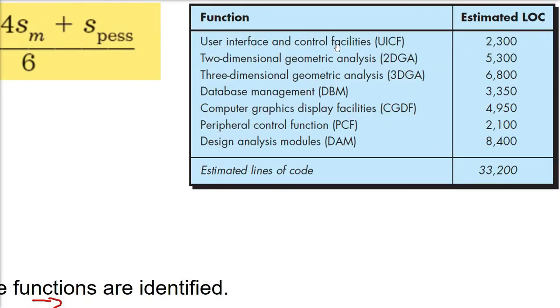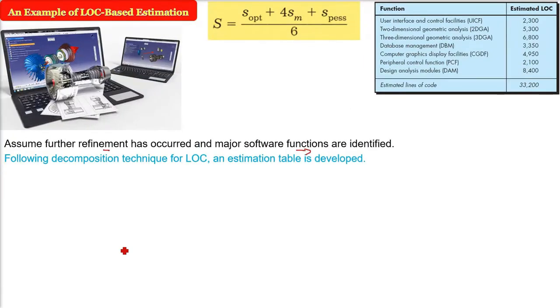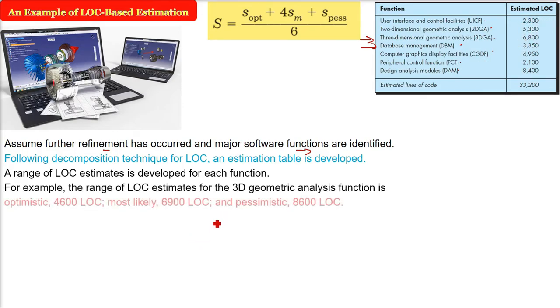These are the major functions. If you read that scope again for the problem, user interface and control facilities is clearly given there in the scope. So UICF you can call it. There will be some estimated lines of code. And this has come from various decomposition techniques and historical data. For example, database management - we are saying 3,350 lines of code has to be written. These are estimated lines of code. Following the decomposition technique, we found out these functions, estimation table we have developed. And there will be a range of LOC estimates developed for each function. This function has come from project scope which we have bounded, refined, and thought of with respect to the function.